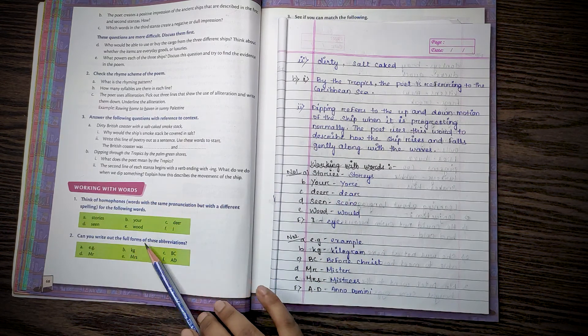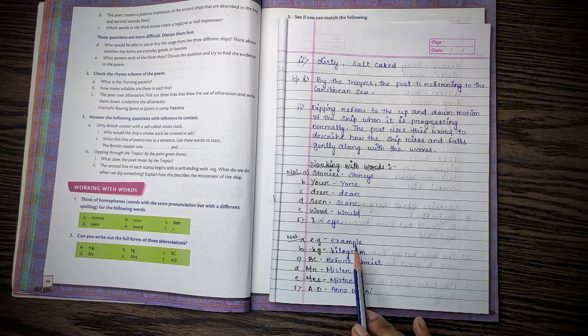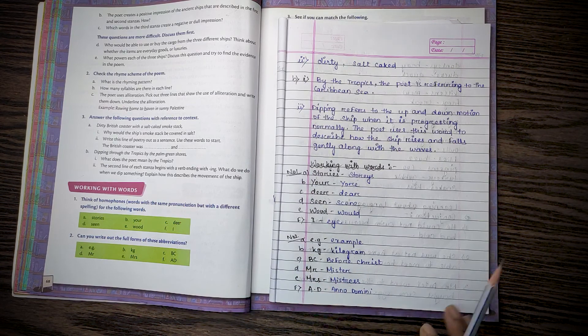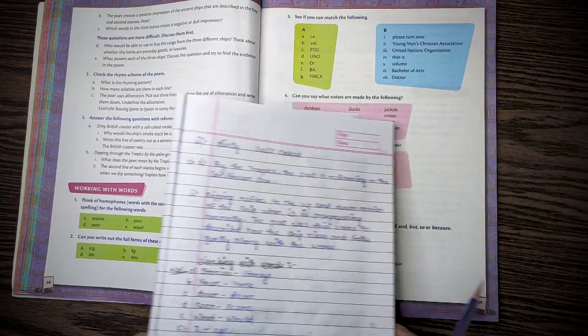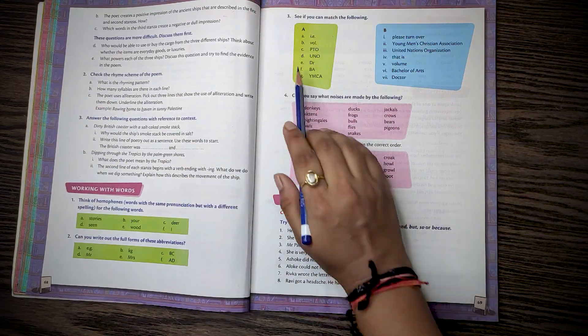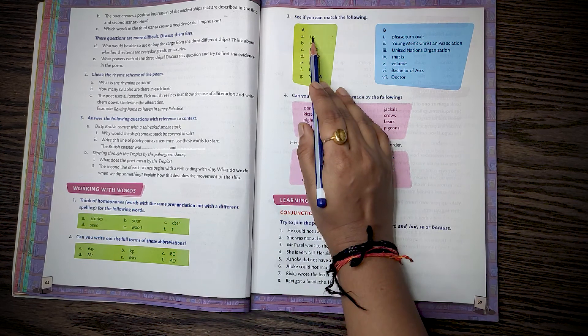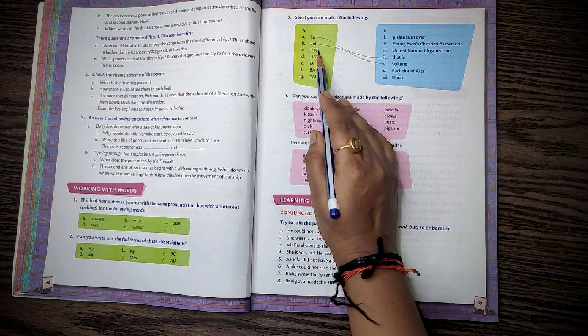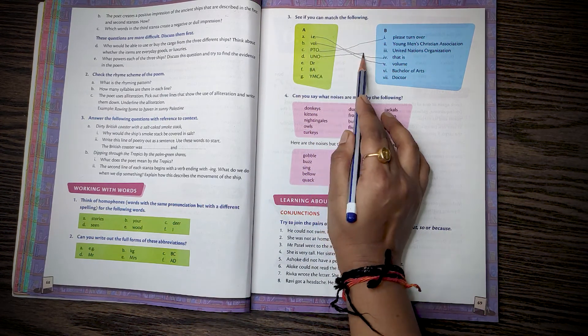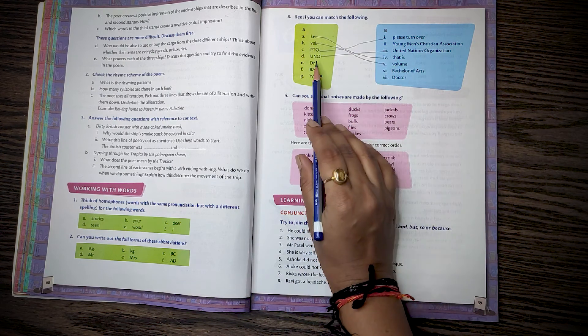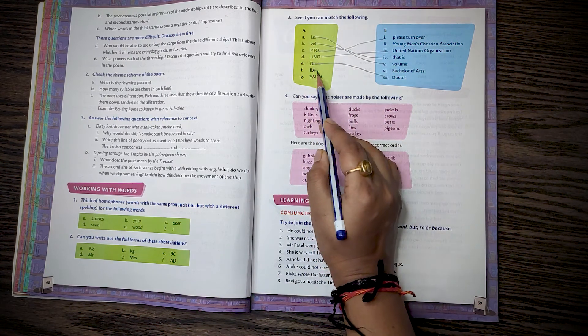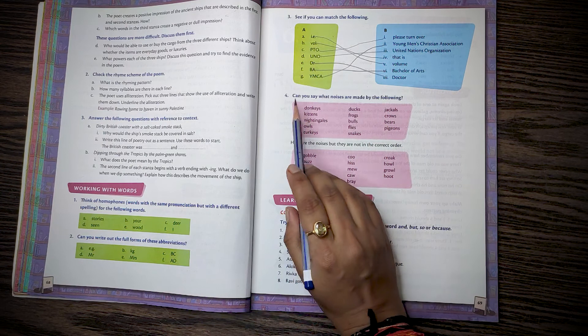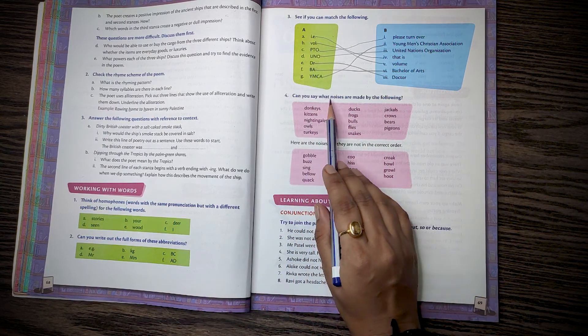Then, can you write out the full forms of the abbreviations? E.g. means for example. KG kilogram. AD Anno Domini. Number 3, see if you can match the following. i.e. is that is. Vol is volume. PTO please turn over. UNO United Nations Organization. Dr doctor. BA Bachelor of Arts. YMCA Young Men's Christian Association.